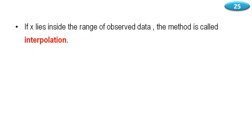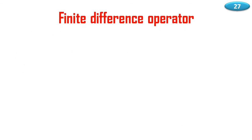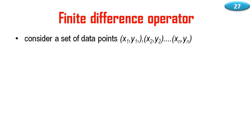If x lies inside the range of observed data, the method is called interpolation. If x lies outside the range of observed data, the method is called extrapolation. Finite difference operator: consider a set of data points x1 y1, x2 y2, etc., xn yn.